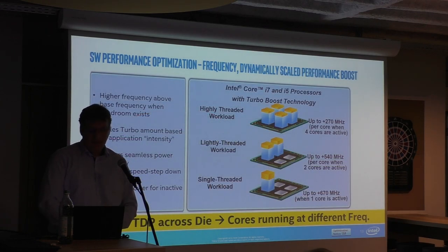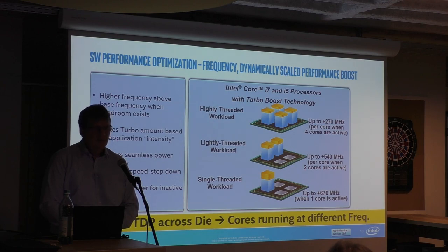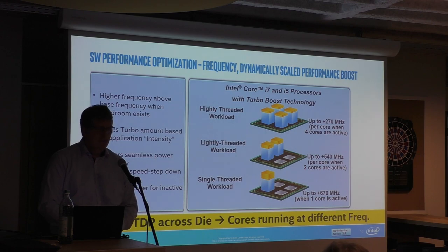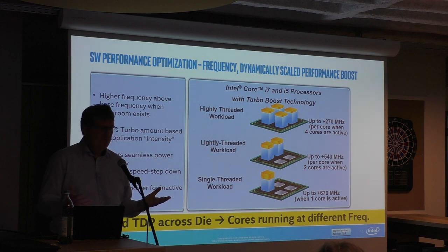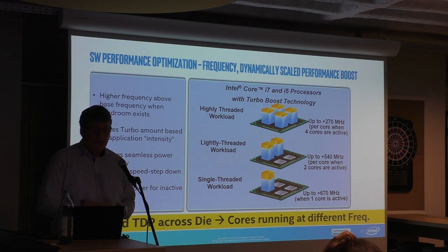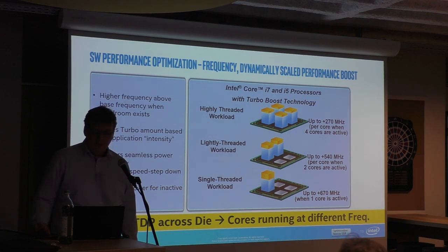Modern processors have more than one core, and you have turbo on each. With a single-threaded workload, you have quite some turbo boost headroom — multiple bins of frequency you can add on top. With lightly threaded workloads, you spread that power envelope across two cores. With highly threaded workloads there may still be some turbo headroom, but of course it's less.